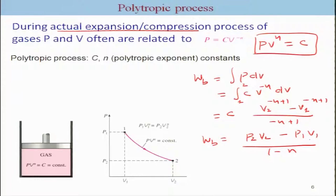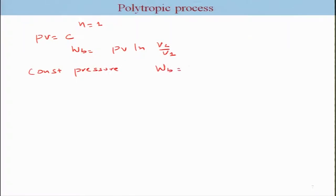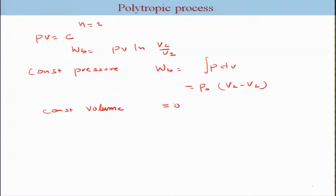Special cases: for n = 1 with pV = constant (ideal gas isothermal), W_b = pV ln(V₂/V₁). For constant pressure, W_b = p₀(V₂ − V₁). For constant volume, W_b = 0, since the boundary does not move at all.